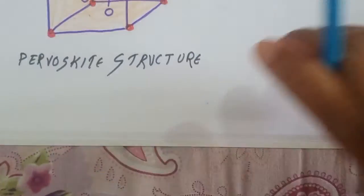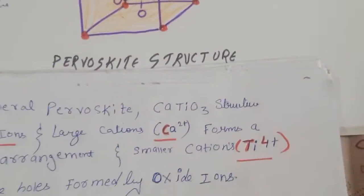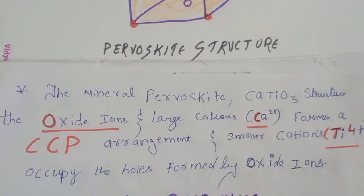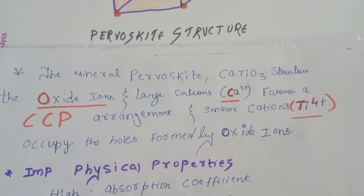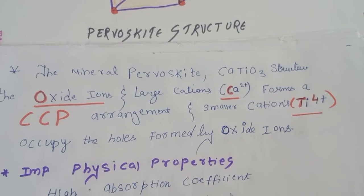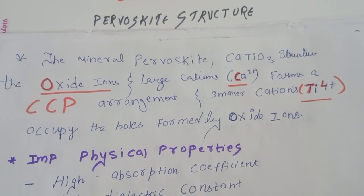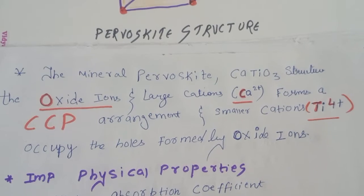So what are the main properties of this structure, perovskite structure? The mineral perovskite, that is our calcium titanium oxide, has the oxide ions and the large cation Ca2+ forms a CCP arrangement.